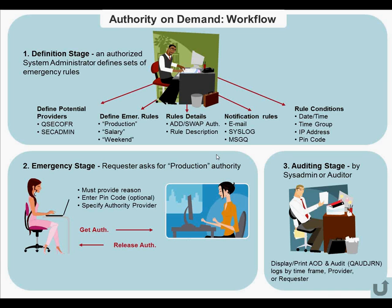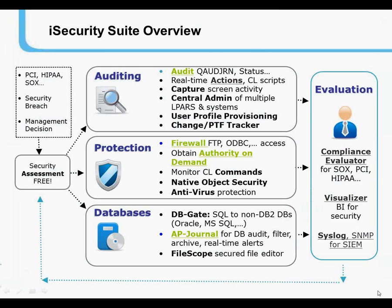Authority on Demand is a product which provides a full audit trail when someone requests special authority on an emergency basis. The product has three stages: the definition stage, the emergency stage, and the auditing stage. At the definition stage, we define who are the potential providers of higher authority, the rules, the details of providing that authority — whether adding higher authority to an existing user profile or swapping to a user such as QSECOFR — notification rules, and the conditions for when this rule can be implemented. A person requests production authority at a certain point in time, and auditors check very closely the audit trail we provide to ensure they did not exceed their rights.